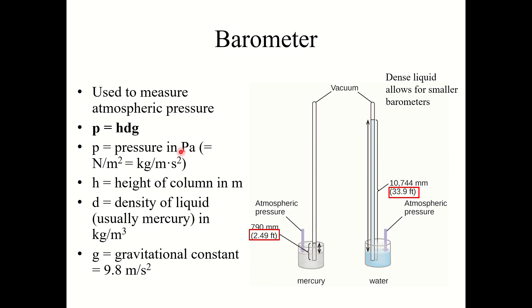When solving for pressure in pascals — where one pascal is a newton per meter squared — breaking that unit down further gives kilogram per meter per second squared. That's why height h needs to be in meters, density d needs to be in kilograms per meter cubed, and g needs to be 9.8 meters per second squared. That way the units cancel out to give kilogram per meter·second squared, which is a pascal.